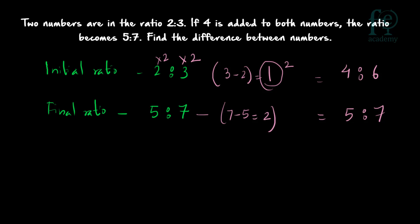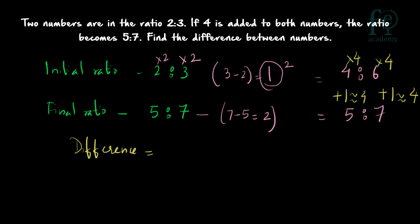So 2 into 2 and 3 into 2 gives 4 is to 6, and the final ratio is 5 is to 7. Now 4 plus 1 equals 5 and 6 plus 1 equals 7. So 1 is equivalent to 4 — only when 4 is added to both numbers do you get the final ratio. Your original numbers are 4 into 4 and 6 into 4. The difference between the numbers is 2 into 4, which equals 8.